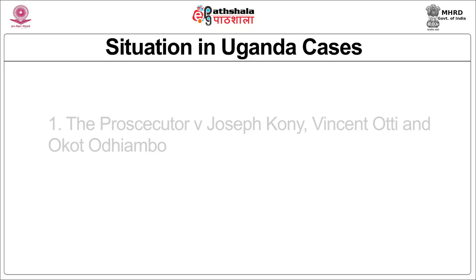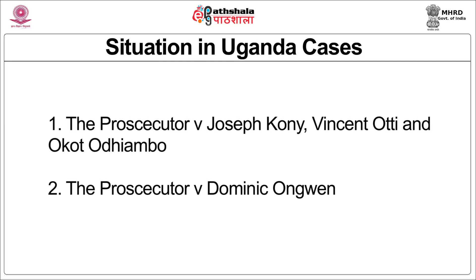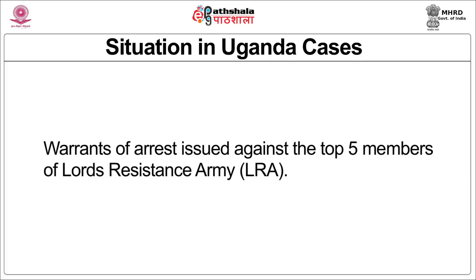In the situation in Uganda, the cases are the Prosecutor versus Joseph Kony, Vincent Oti, and Okot Odiambo, and the case of the Prosecutor versus Dominic Onguin. Warrants of arrest have been issued against the top five members of the Lord's Resistance Army, or the LRA.